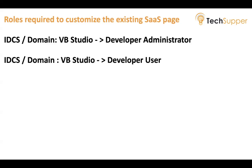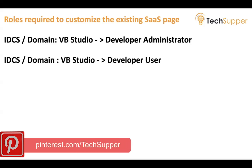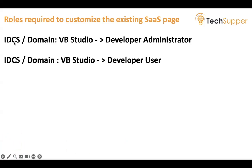SaaS roles will be different, but how are we going to map those SaaS roles with the VB Studio roles? We don't need to map them — they are already mapped and synchronized automatically. However, sometimes synchronization is disabled, and then your SaaS administrator has to log into the SaaS IDCS or PaaS IDCS and give permissions to the user directly. But if role sync is enabled, you don't need to worry about it.